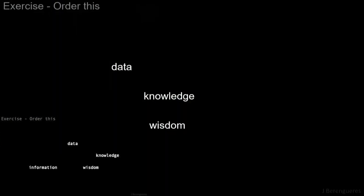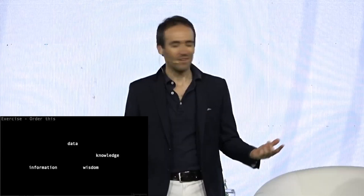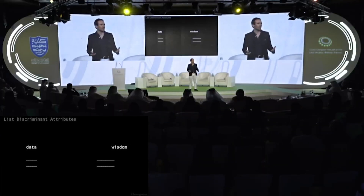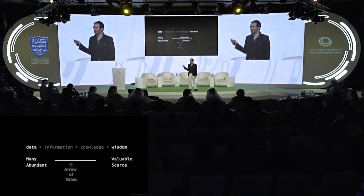Number two: know the difference between data and information. Can you order these four keywords? Most students arrange them as: information, then data, then knowledge, and wisdom. What makes them arrange words like this? Data is abundant — there is a lot of data. Wisdom is scarce and it's valuable. This arrow is called the arrow of value.